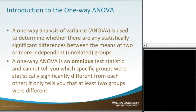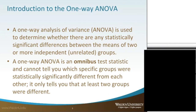The one-way analysis of variance, or the ANOVA, is used to determine whether there are any statistically significant differences between the means of two or more independent unrelated groups. It's similar to a t-test, except with the t-test we have just two groups. With the ANOVA, we're looking at three or more groups.